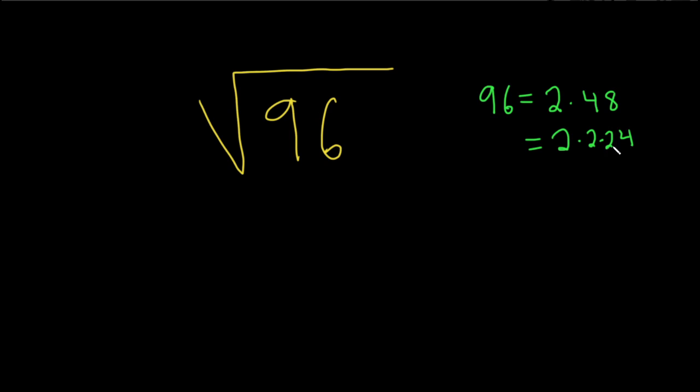And then 24 is 4 times 6. This is 2 times 2 times 4 times 6. Then you see here, we have 4 times 4, so this is 16.